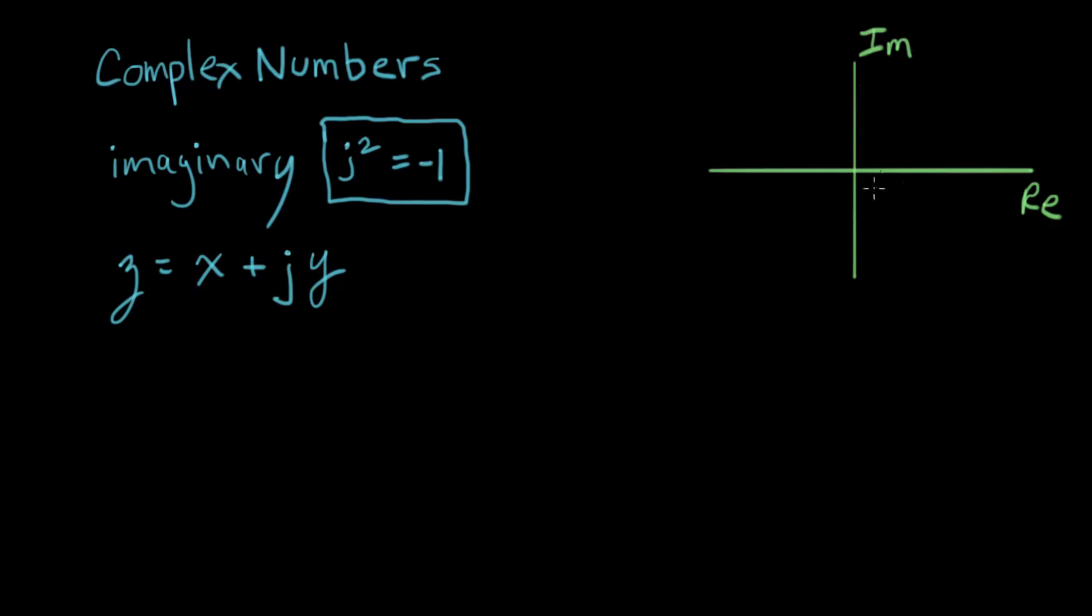And if I have a complex number z, I can represent it on this plane by going over a distance x and up a distance y. That will give me an imaginary number, and that's z. So z is a location in this complex space, and that's one representation of a complex number.